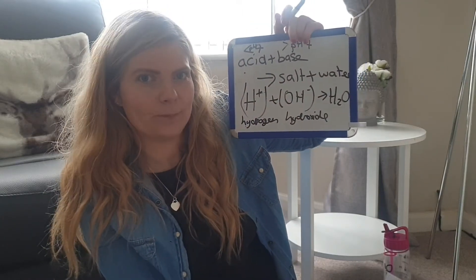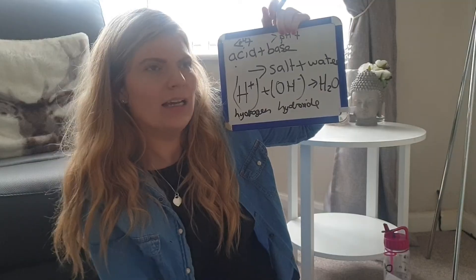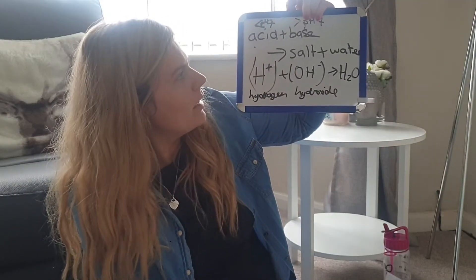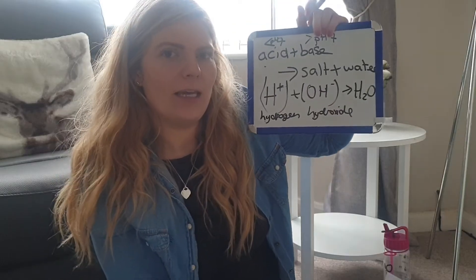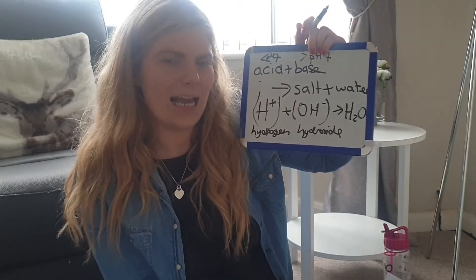So to summarise: acids and bases when mixed together neutralise each other in a chemical reaction. We call this neutralisation, and an acid plus base always makes a salt plus water. I'll name the salts in a separate video and leave a link here once it's made. Thanks for watching and I'll see you next time.